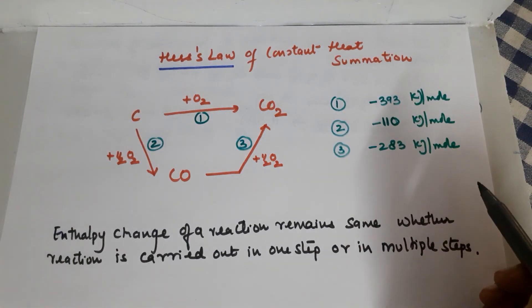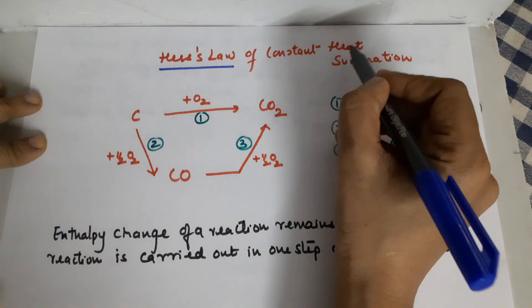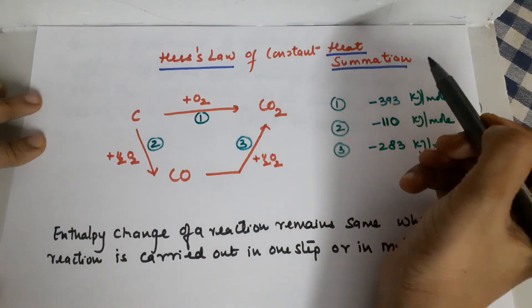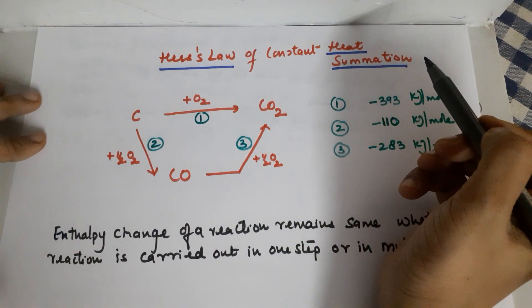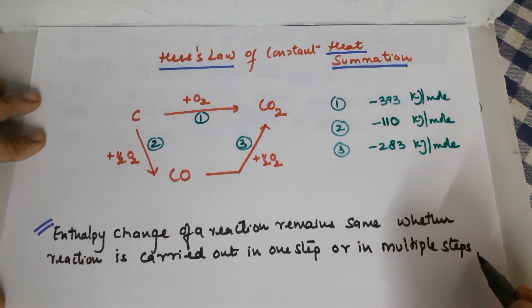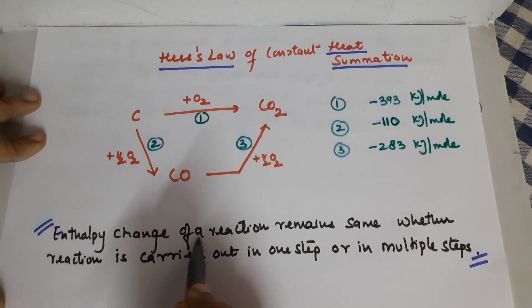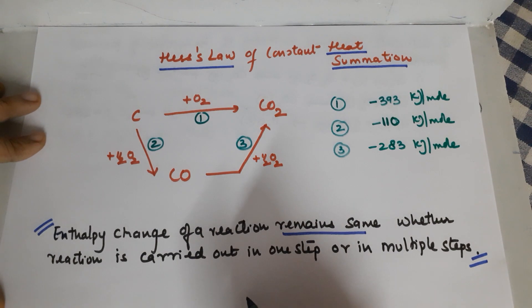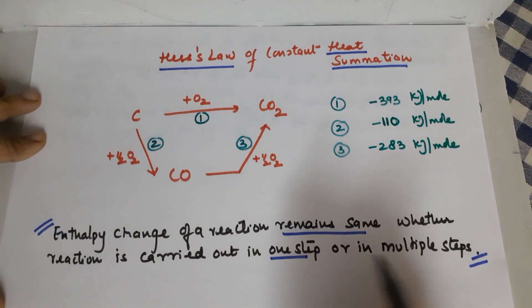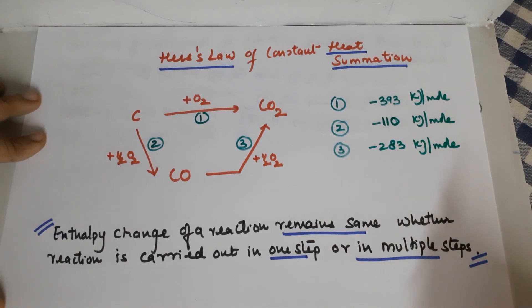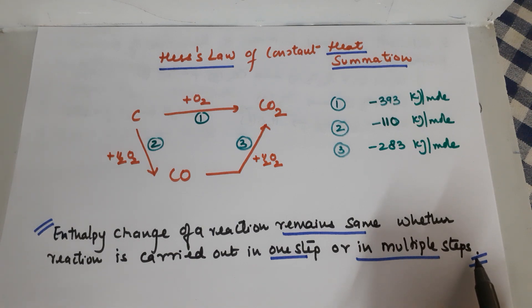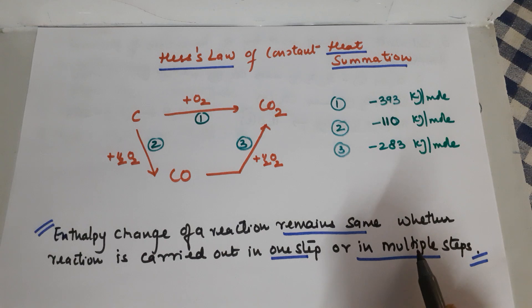Since it's a named law, it has its importance. It is regarding the enthalpy or heat summation — the addition of heats involved. The statement for this law states that the enthalpy change of a particular reaction remains the same whether you do it in one step or multiple steps. If it's exothermic with 100 kilojoules of energy released, even if you do it in four steps, the amount of energy released remains the same.